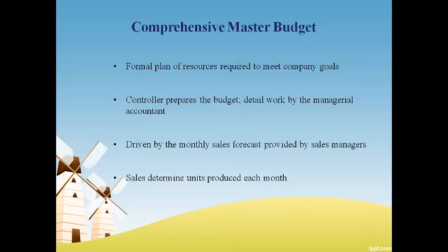The production budget begins with the number of units to be produced and estimates the amount of product costs that are expected to be incurred. Period expenses are estimated by the managers of the various functional departments.